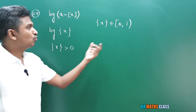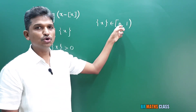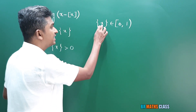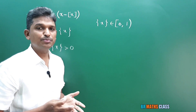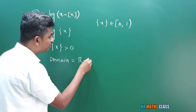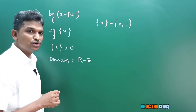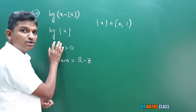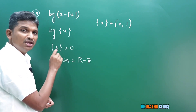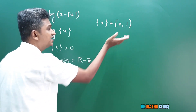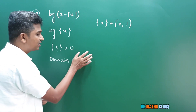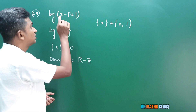We want fractional part of x to be greater than 0. All values in the interval (0,1) are greater than 0 except 0 itself. We need to identify the x values for which fractional part of x equals 0 — that happens whenever x is an integer. So what are the x values for which fractional part of x is greater than 0? That is all real numbers except integers. If you take x as an integer, fractional part becomes 0, and we cannot choose integers. Therefore, domain of this function is all real numbers except integers.